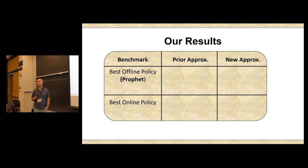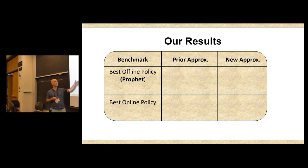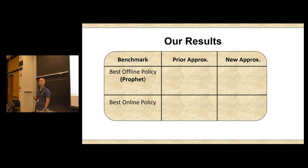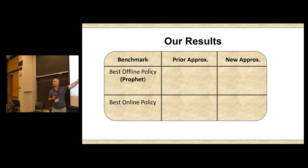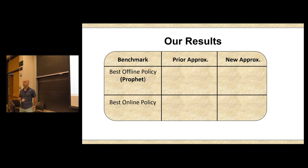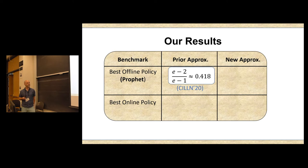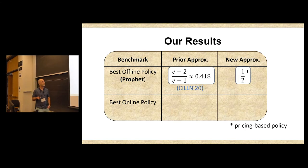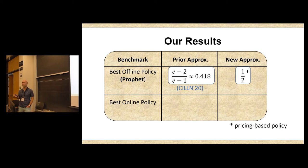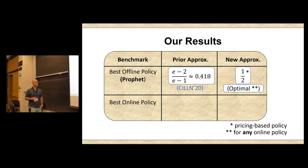So what are our results? Here, there's two kind of benchmarks you could compete with. You can compete with a prophet. So again, this hindsight optimal solution, the best offline policy. You can also compete with the best online policy, which is not necessarily restricted to use prices. So the best prior approximation for competing with a prophet is due to a work of Colina, Imolica, Leighton Brown, Lucier, and Newman from Wine 2020, who showed you can get essentially 0.42. So what we show in this work is that you can improve this bound to one-half and do so while using posted price policies. On the other hand, mirroring the classic lower bound of Krengel and Sucheston, we show that one-half is the best you could do. And this lower bound holds for any online policy, pricing-based or otherwise.